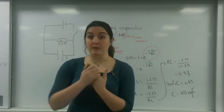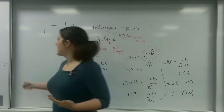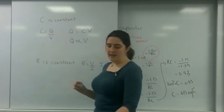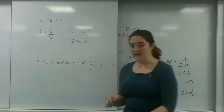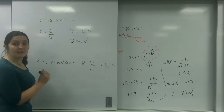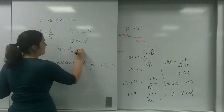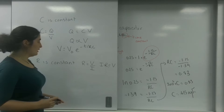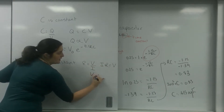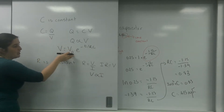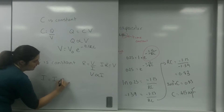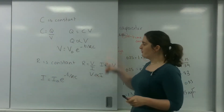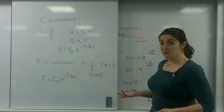Now, what about if instead of charge, they give you potential or current? I know that capacitance is constant, and since C equals Q over V, Q is directly proportional to V. So I can replace Q in the formula with V. Similarly, since R is constant and V is proportional to I, I can also replace Q with I. These two alternative formulas are not on your data sheet, but you can simply substitute them in.